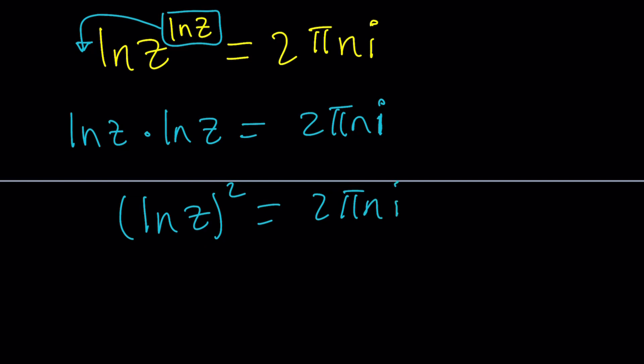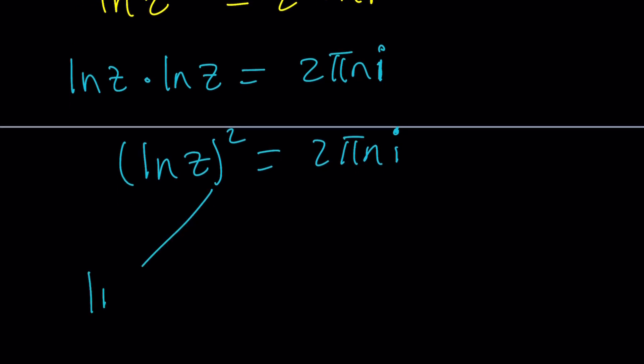How do you solve for ln z? Easy — just square root both sides. But remember, i has two square roots. So with the two square roots coming from the left-hand side, there is going to be a total of four. But there are much more than that because of n — n is the key here. So we can write ln z, one of the solutions at least, as ln z equals the square root of 2πni.